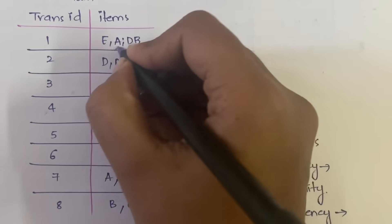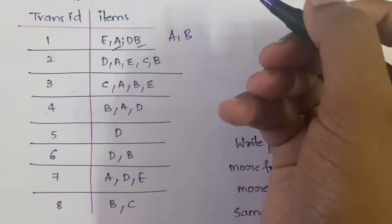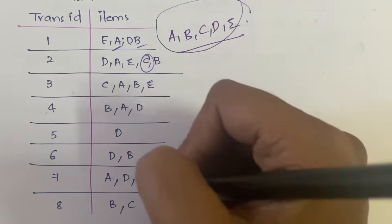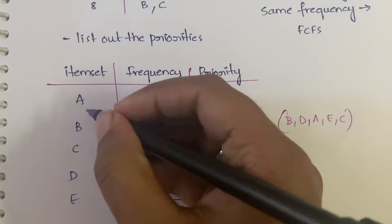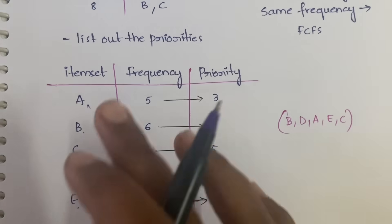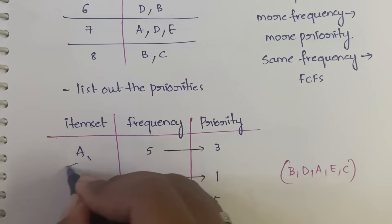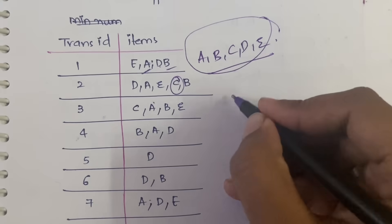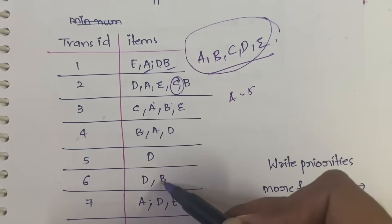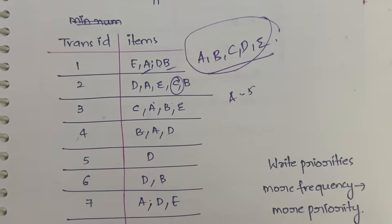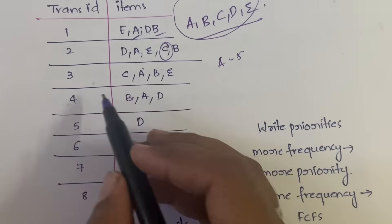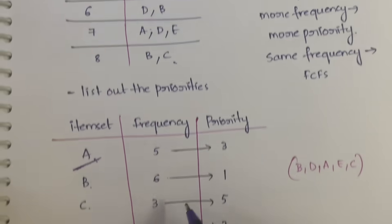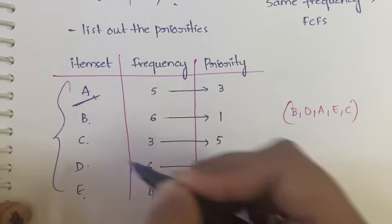First step is to list out the individual items. The individual items you can get are A, B, C, D, and E. After you list out the individual items, you need to calculate the frequency. Frequency of A is 5, frequency of B is 6, frequency of C is 3, and like that you have to write the frequency of all five items.